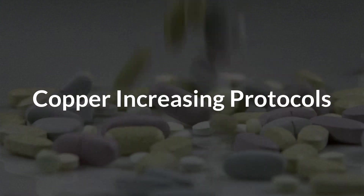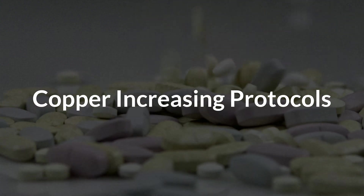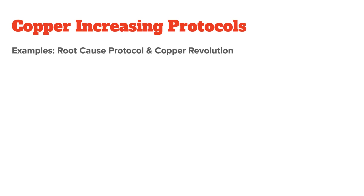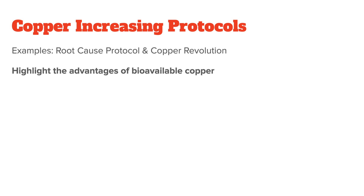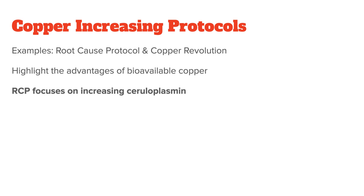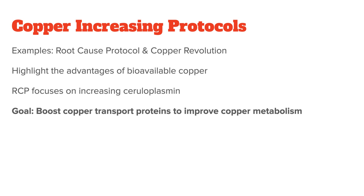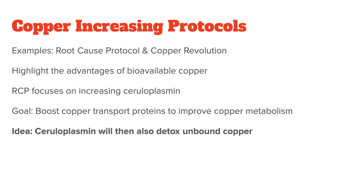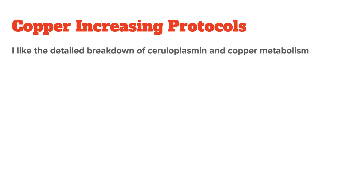Let's start with the copper-increasing protocols — those that want you to take more copper. The most famous ones would be the root cause protocol and the copper revolution program. Both of them highlight the advantages of bioavailable copper. Among other things, the root cause protocol focuses on increasing ceruloplasmin — it aims at increasing your copper transport protein to improve overall copper metabolism. The idea is that ceruloplasmin will also bind to toxic copper in your tissue and help your body eliminate it. The copper revolution program works a little differently, but overall it also focuses on copper's positive effects and wants you to increase your intake of it. I generally like the detailed breakdown of ceruloplasmin and copper metabolism in these protocols.